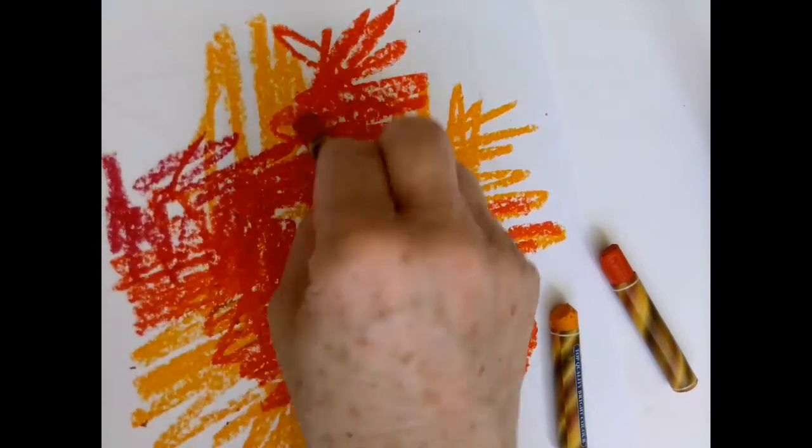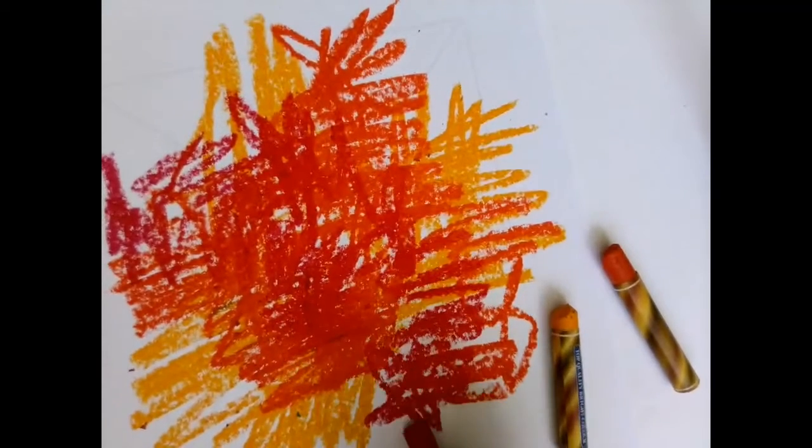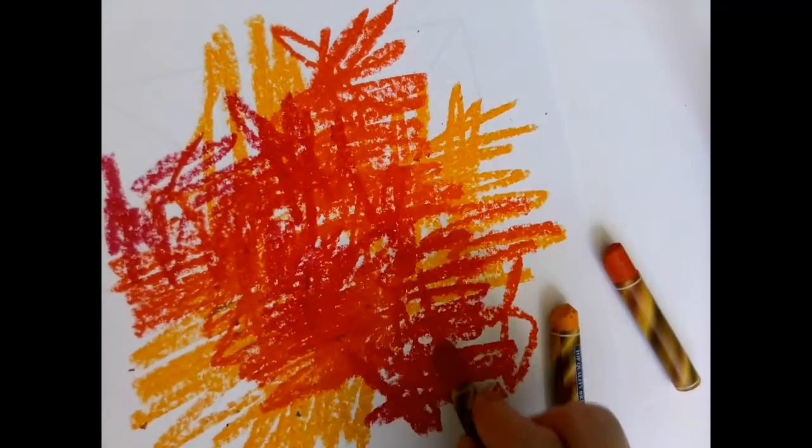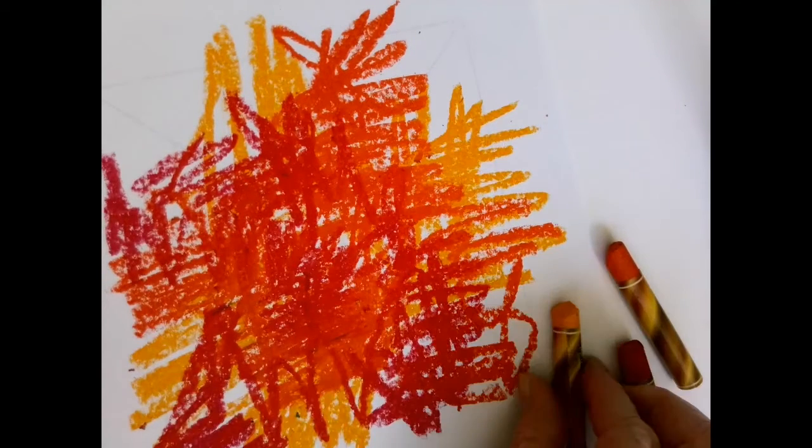That first color you put down will kind of stain the paper a little bit or whatever is actually touching the white. And then you can keep layering, keep blending the colors until you get something you like.